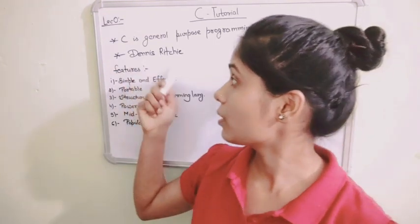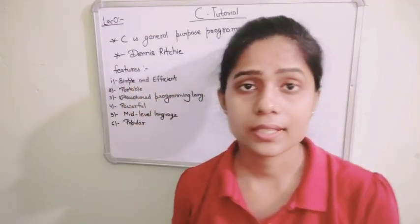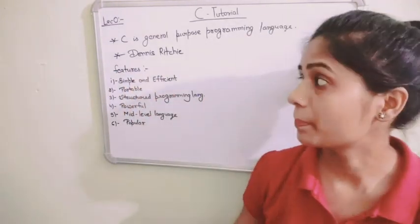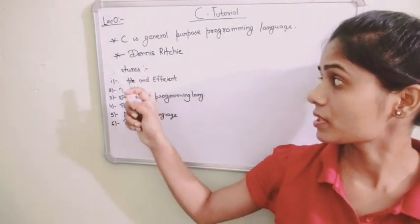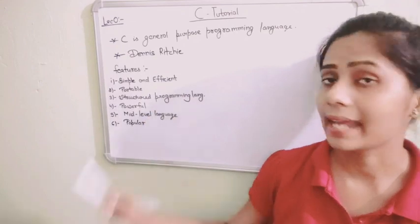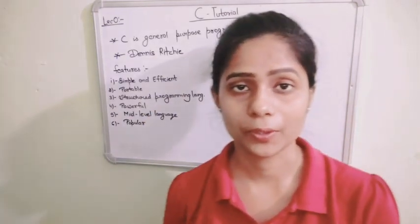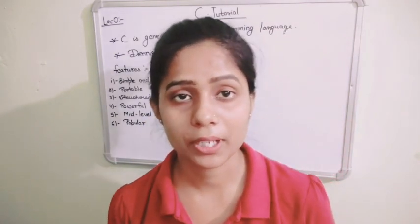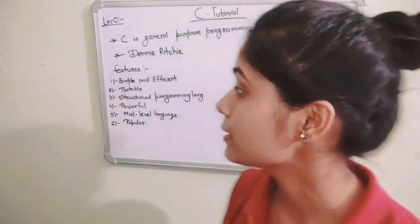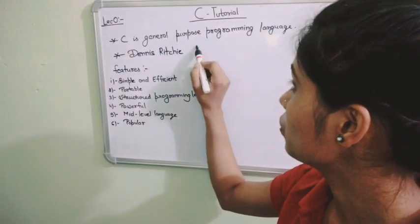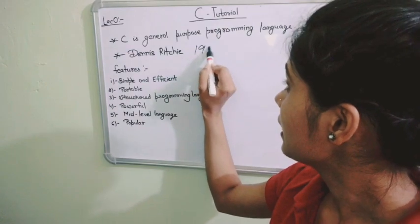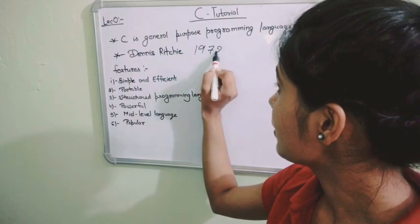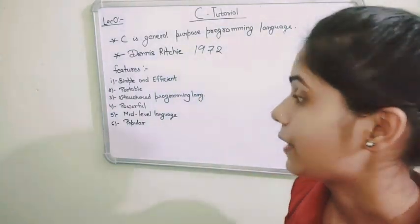Who developed C? C was developed by Dennis Ritchie in 1972.